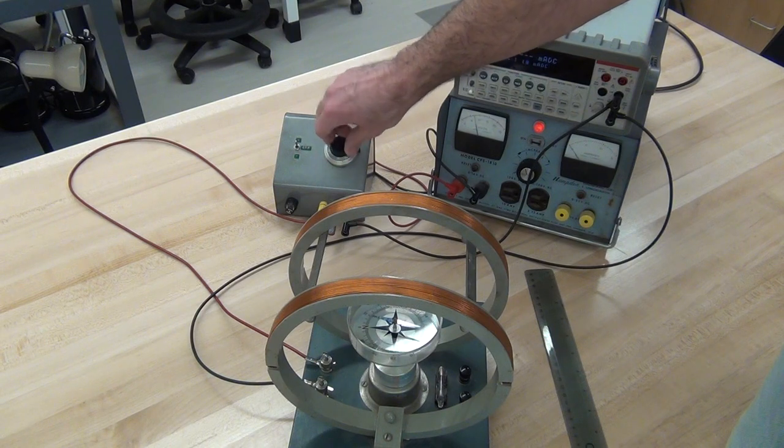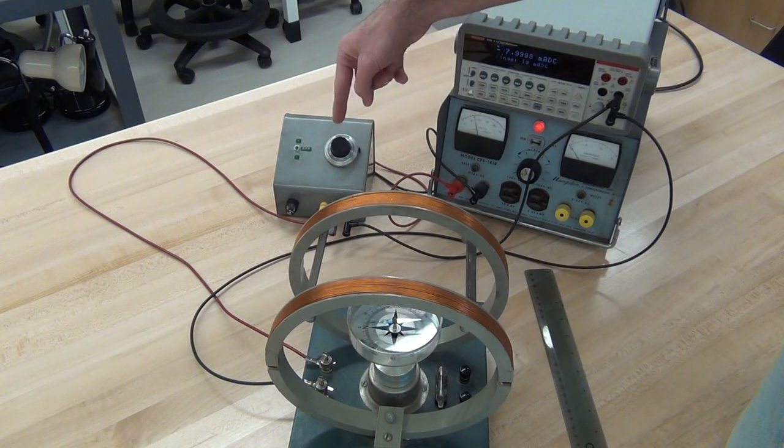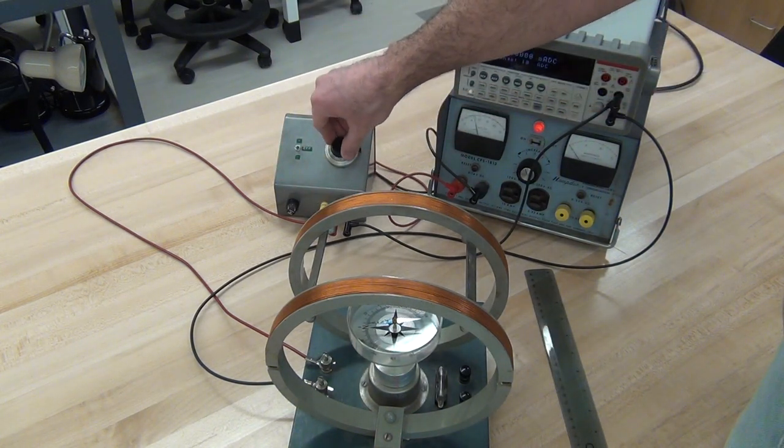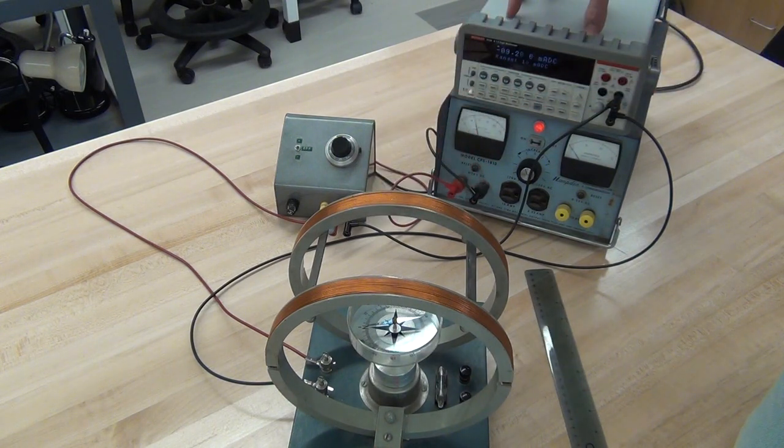And you can decrease back down, throw the switch on the voltage divider to send the current the other direction, and now you get a deflection that way. Negative current, so negative 10 degrees, negative 20, all the way up to negative 60, measuring those currents.